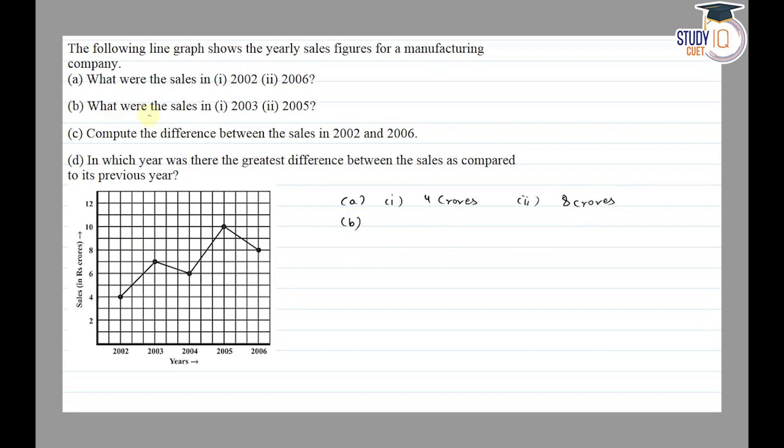Part B asks what were the sales in 2003 and 2005. For 2003, we match on the graph and join to the y-axis. This is between 6 and 8, so with a gap of 2, this is 7 crores. And for 2005, this is 10 crores.